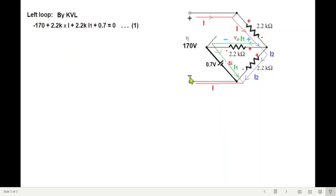So first one, left loop, start from here, negative 170. I into 2.2K. So 2.2K into I. And now it is dividing. So we're going left. So it is I1 into 2.2K with the positive sign. So positive 2.2K I1. And then coming here, we have positive of the battery, 0.7V. So positive 0.7 equals 0. So this is the first equation.